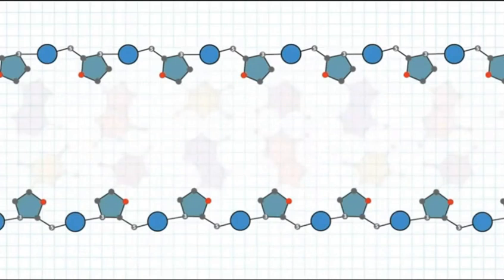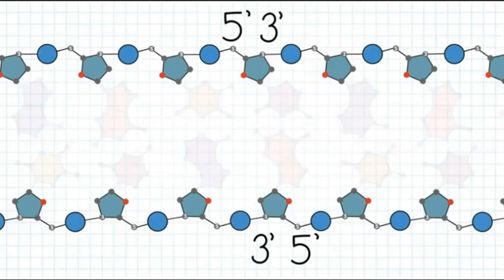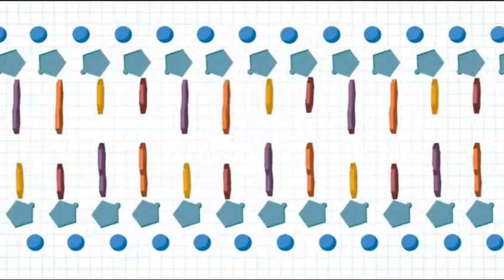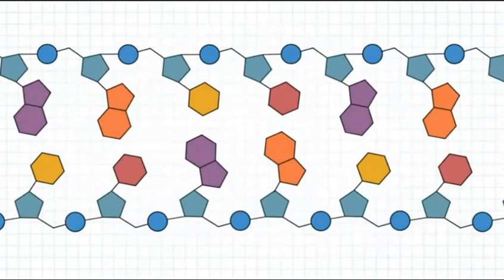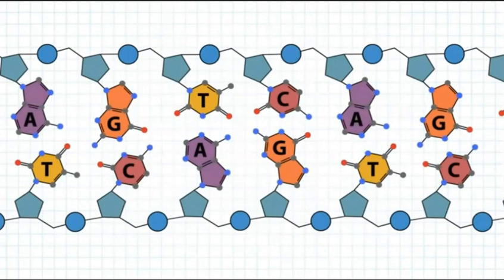Looking within the sugars, there is an intrinsic orientation difference between the two strands. On the top strand, the 5' carbon of each sugar is on the left and the 3' carbon is on the right — the opposite is true for the bottom strand. Reading left to right, that makes the top strand orientation 5' to 3' and the bottom strand orientation 3' to 5'. These strands are also sometimes called Watson and Crick. Although nucleotides come together through covalent bonds in the backbone, the two DNA strands interact through non-covalent hydrogen bonds between the bases.